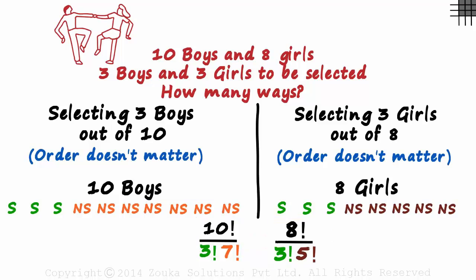So do we add these two or multiply them? The question gives us the answer. 3 boys and 3 girls. And always implies multiplication. So we multiply these two and this becomes our final answer.